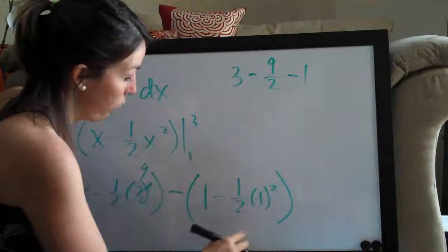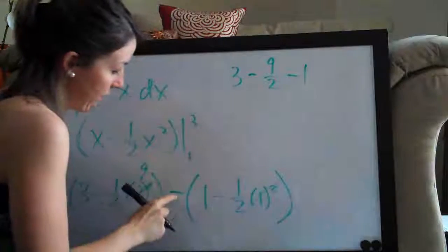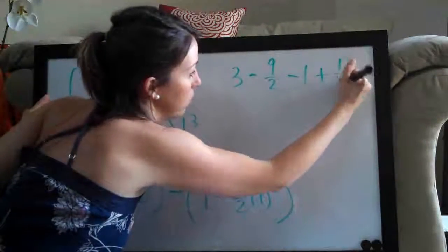And then 1 squared is 1, so this whole thing is just 1 half. And since we have minus a negative, that turns into a positive 1 half.